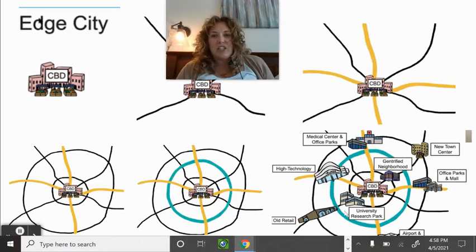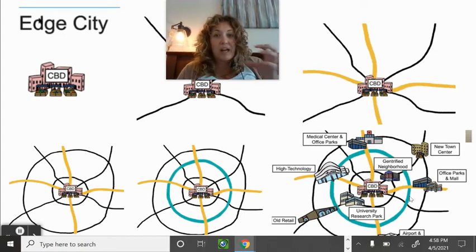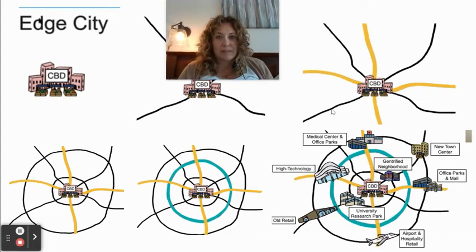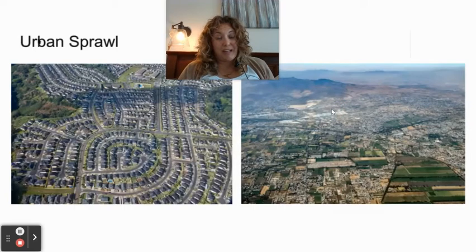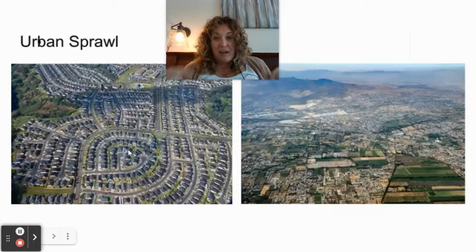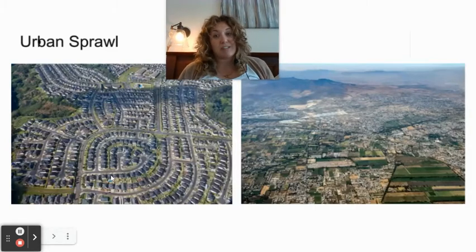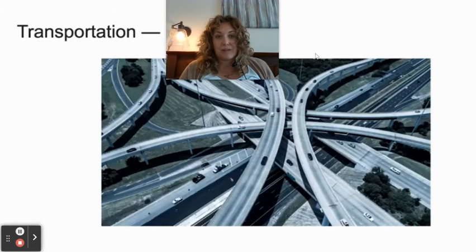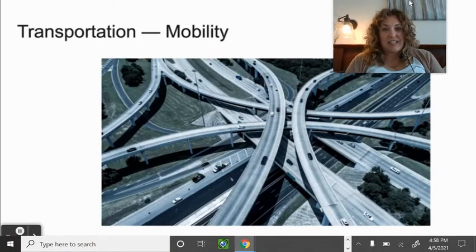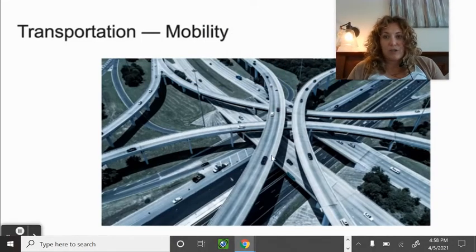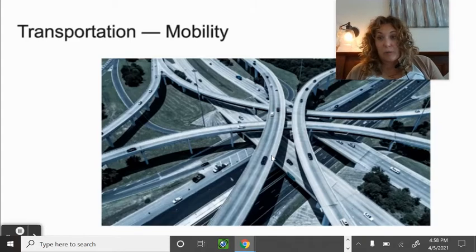Urban sprawl: this is suburbia — building out instead of up. There's plenty of room to build out, and people in the suburbs want their own house with their own yard. As long as you have access via highway, train, rail, boat, or ferry, it doesn't bother Americans to live a bit outside the city because they can commute in.